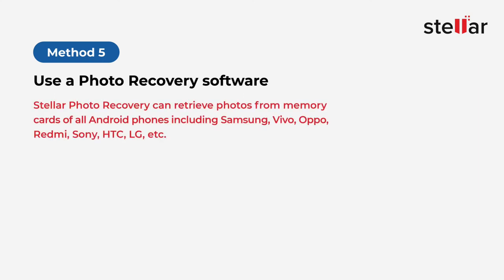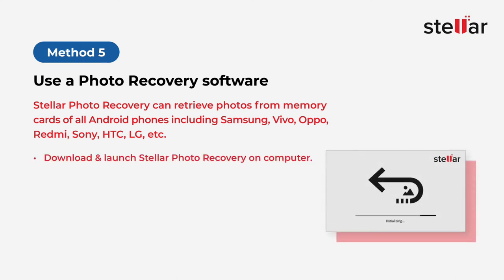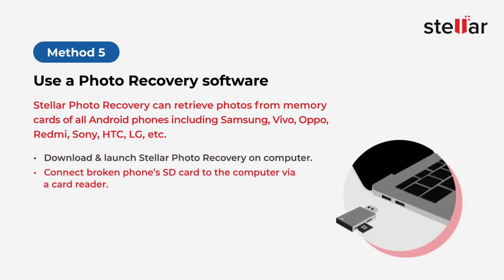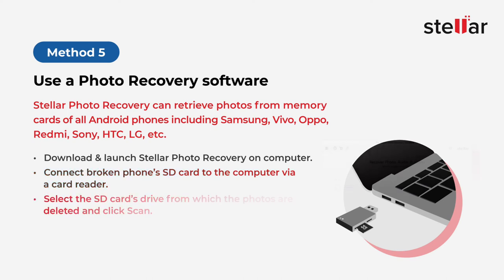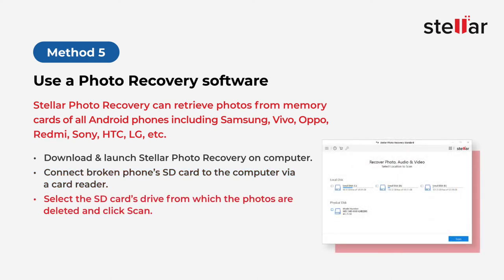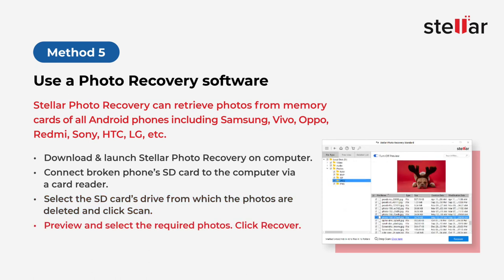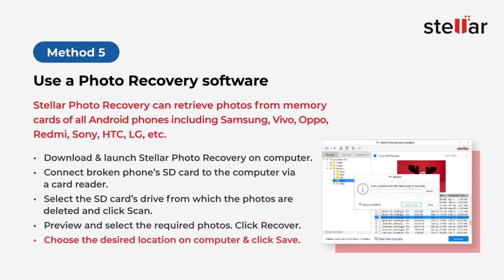Stellar Photo Recovery Software can retrieve photos from memory cards of all Android phones including Samsung, Vivo, Oppo, Redmi, Sony, HTC, LG, and others. Download and launch Stellar Photo Recovery Software on your computer. Connect the broken phone's SD card to the computer via card reader. Select the SD card's drive from which the photos are deleted and click Scan. Preview the lost photos, select the required photos, and click Recover. Choose the desired location on your computer and click Save.